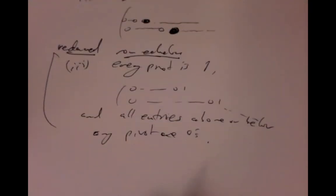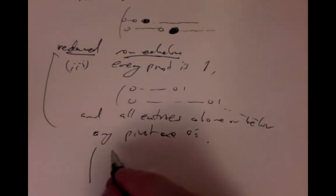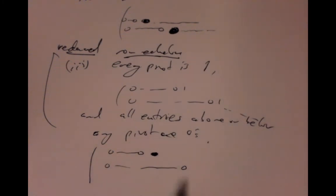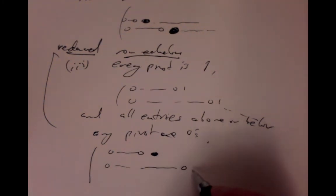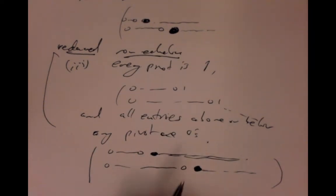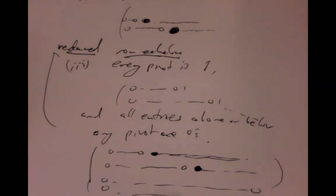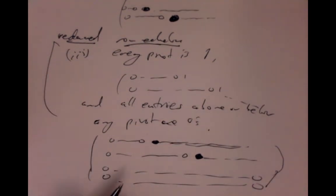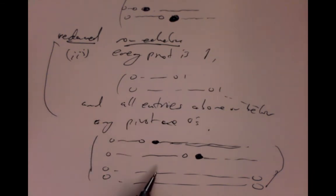When we have something in row echelon form, it's got some zeros and then some non-zero entry, then even more zeros — strictly more zeros on the next one, at least one more zero — and then some non-zero entry, possibly non-zero entries after that. Only at the end of the matrix can you have all zeros; you could have a few rows that are all zeros, but they have to occur at the very bottom.